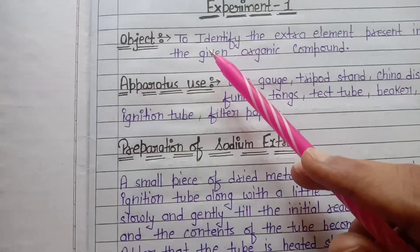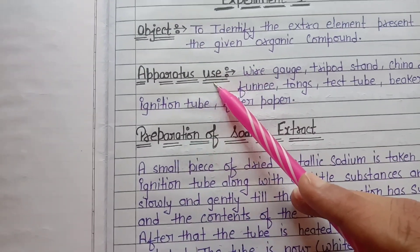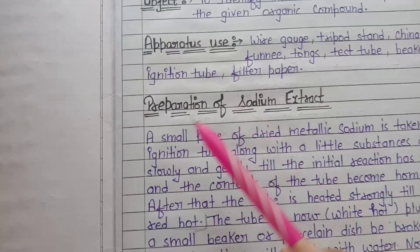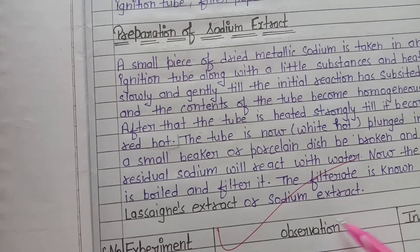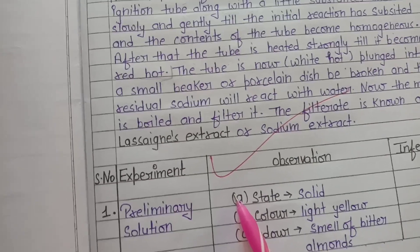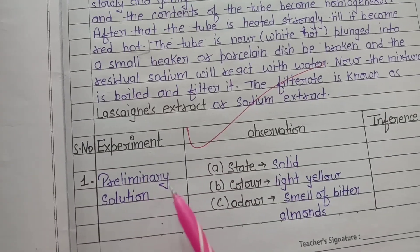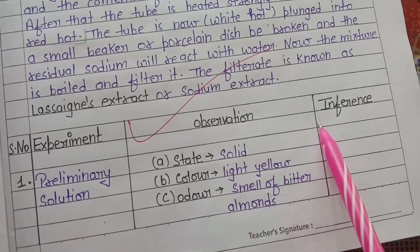First we have to write the aim, then the apparatus used, then the preparation of sodium extract. Then we will make a table and write serial number, experiment, observation, and inference.